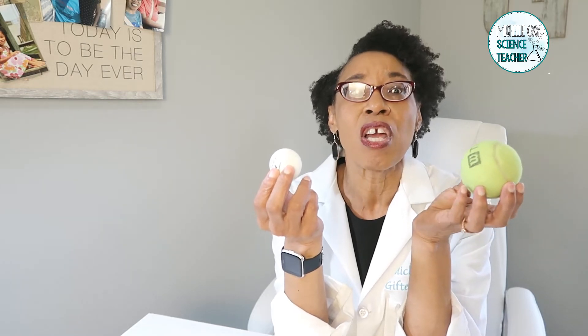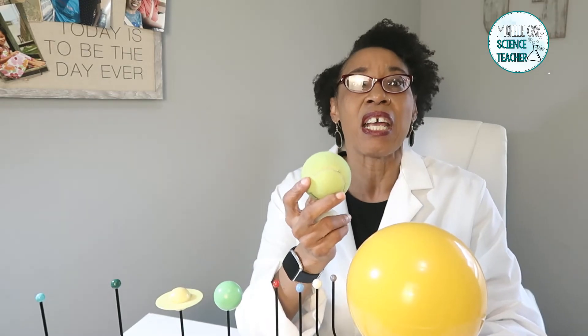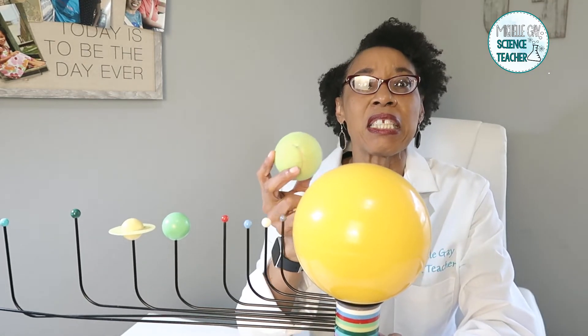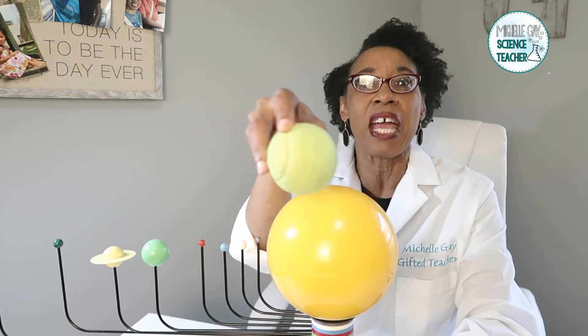Earth orbits the sun, and that's how we determine and know that we get seasons and we get day and night. While Earth is orbiting, our natural satellite is also orbiting Earth.